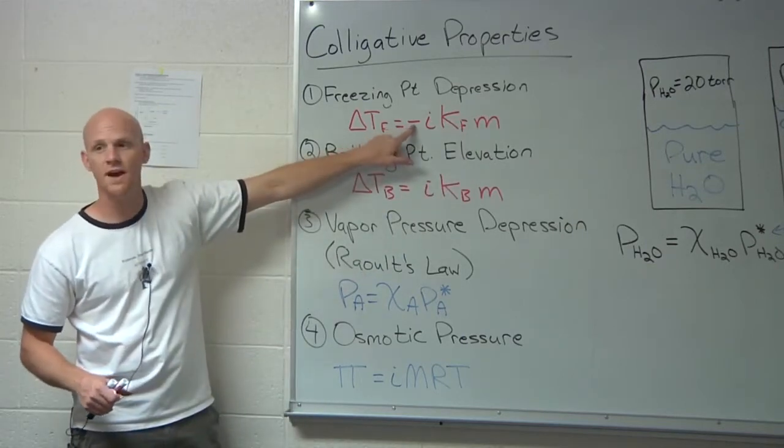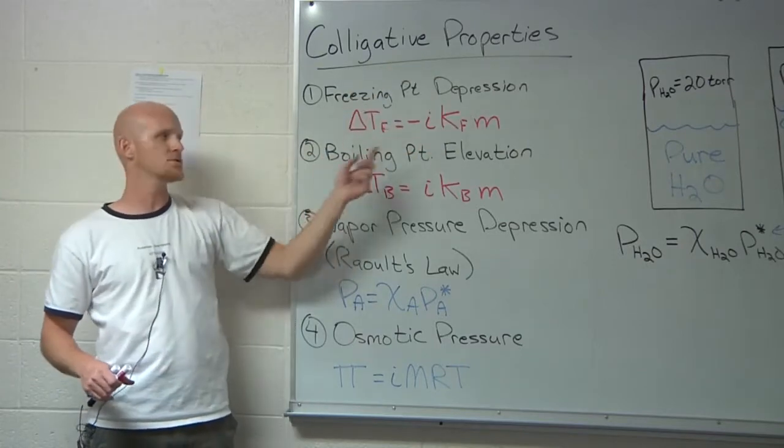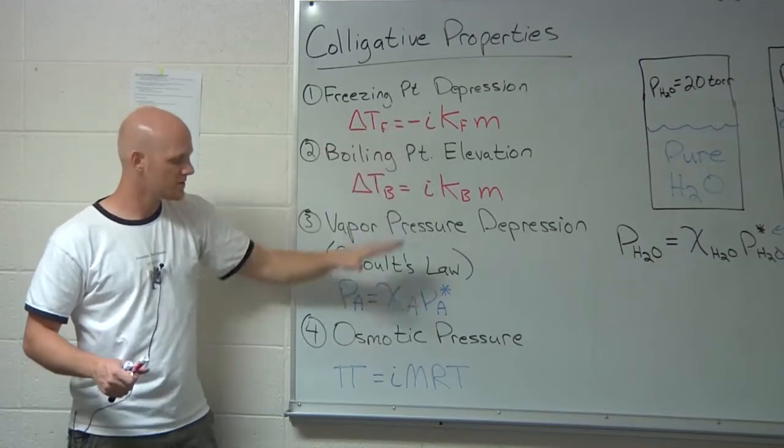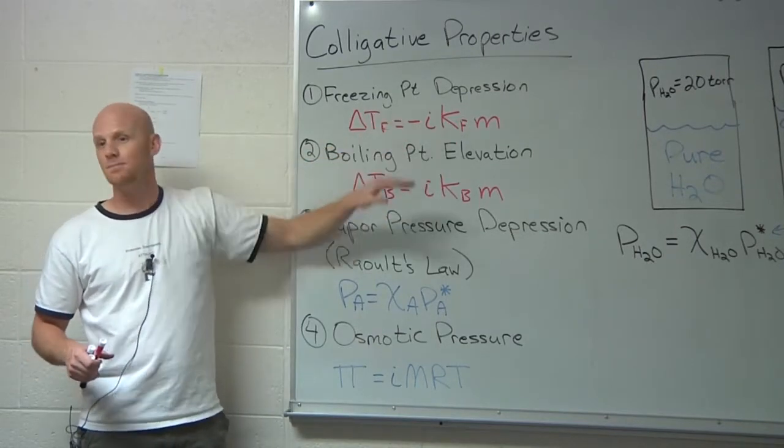Sometimes you won't see the negative sign right there, and they expect you to remember that freezing points go down, even though it's not built into the equation. Well, I don't like that either. So just one thing to note, the I's may not show up and sometimes you may not see that negative sign, but keep those in mind.